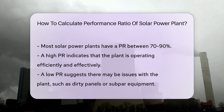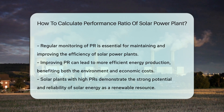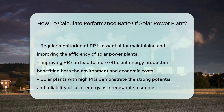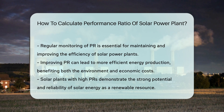Most plants score between 70-90%. A high PR means the plant is converting sunlight like a champ. A lower PR? Time to check for issues like dirty panels or equipment not performing up to snuff. This simple ratio helps owners and engineers keep solar plants in tip-top shape.